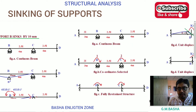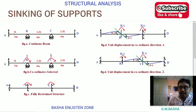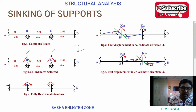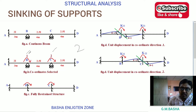Next step: coordinate selection. Unknown displacements equal 2, so we select two coordinate positions. At A and D it is fixed, so no coordinate positions there. We select one at B (delta 1 = theta B) and one at C (delta 2 = theta C). For the fully restrained structure, we remove the roller supports and fix the entire structure at B and C along with the already-fixed ends A and D.